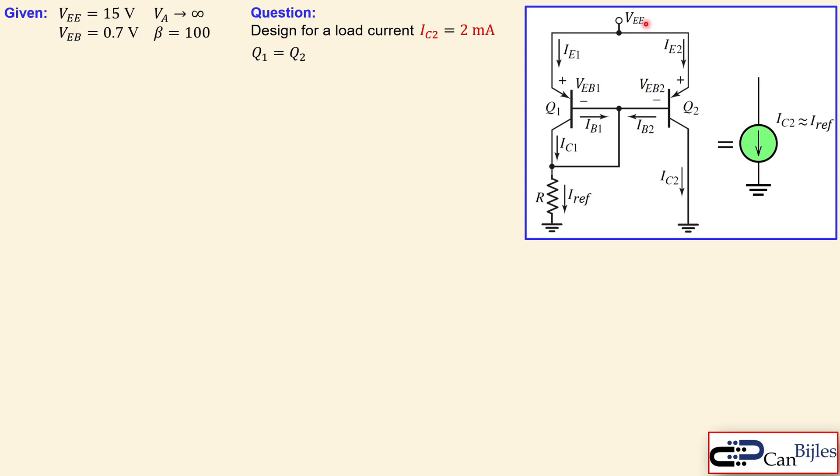Now we have a VEE of 15 volts here, which is our DC voltage source. And we have a VBEB, I must say, is 0.7. So this emitter to base voltages are exact same for both transistors.